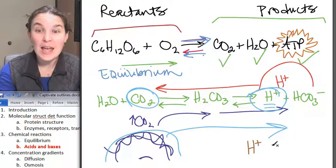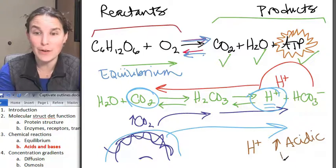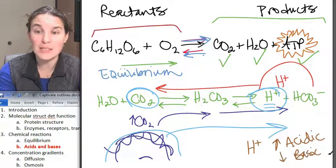Hydrogen ions, if you have a lot of them, you have a very acidic substance. And if you have very few of them, you have a very basic substance.